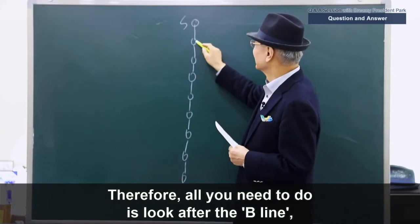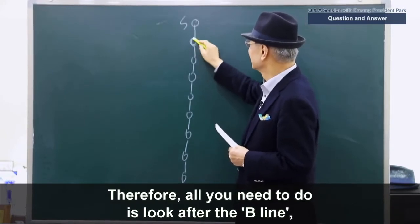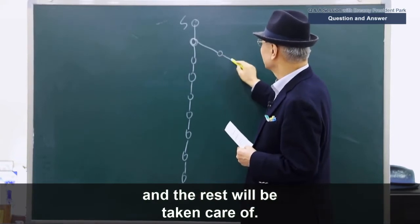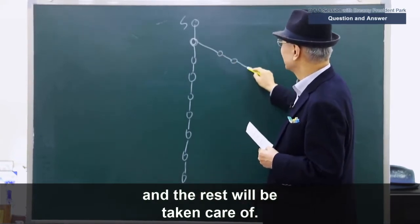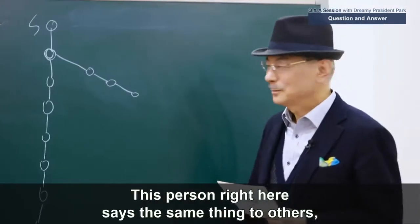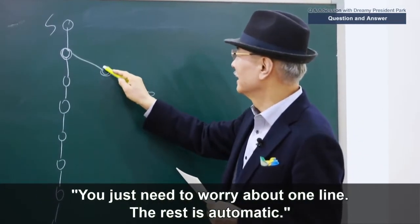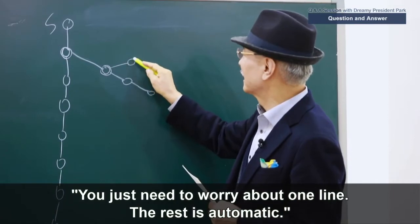The sponsor line is also called the original line, which will be totally taken care of by the sponsor. Therefore, all you need to do is look after the B line, and the rest will naturally be taken care of. This person right here says the same thing to others. You just need to worry about one line. The rest is automatic.